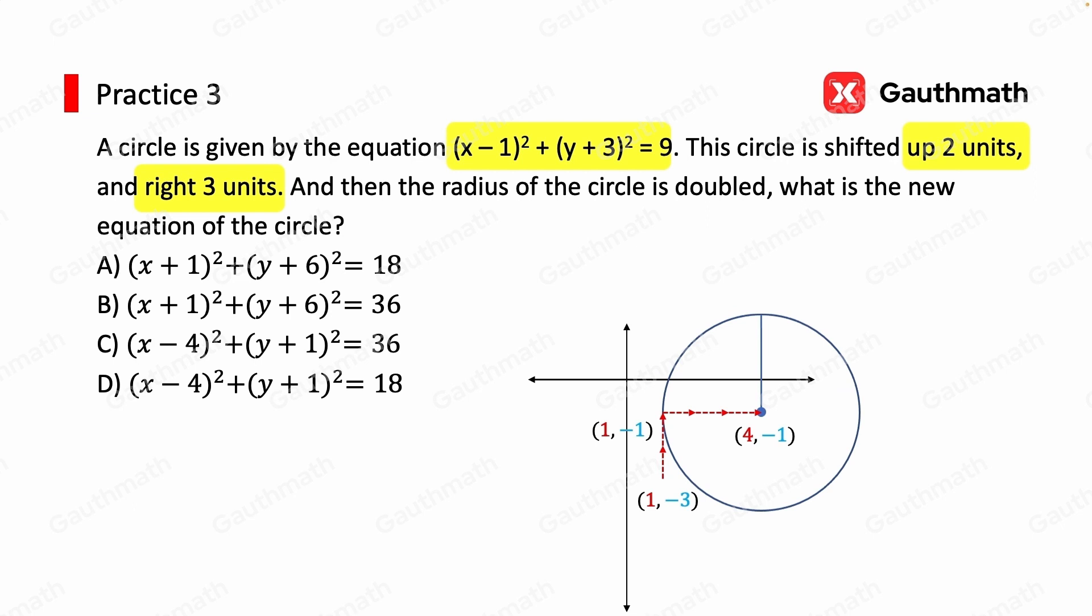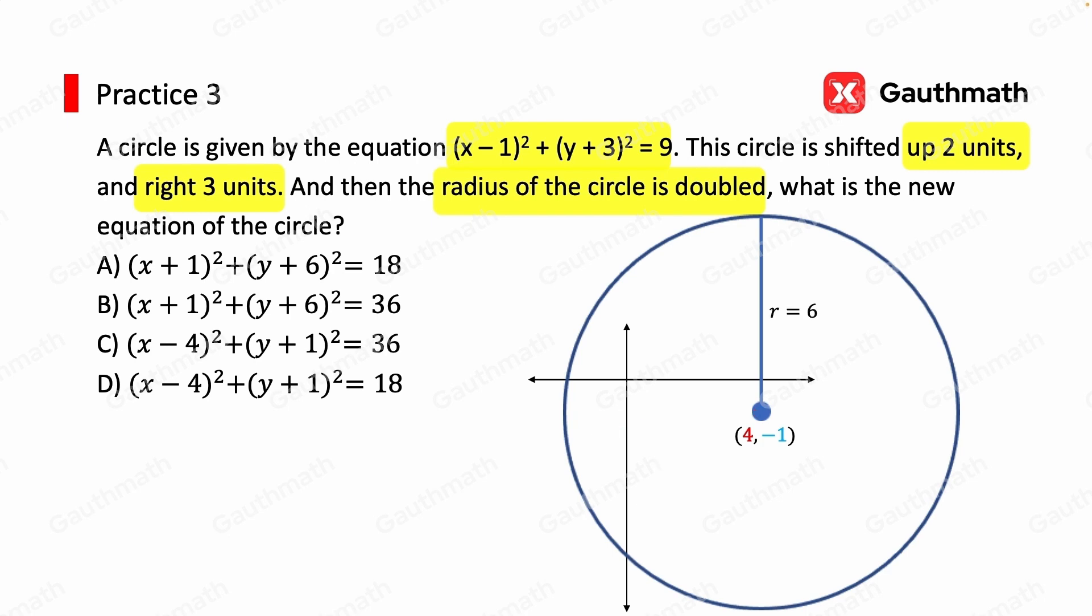And then we want to double the radius. So the radius becomes 6. And that's our new circle. The equation becomes x minus 4 squared plus y plus 1 squared equals 36. And that's option C.